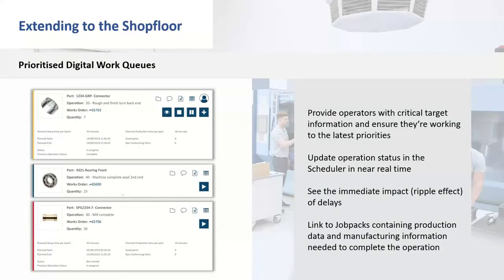The output of the schedule can be distributed to the shop floor. You could print it and pin it on a board, but the danger is it gets out of date very quickly — as soon as a job overruns, the subsequent schedule changes as operations flow through to other resources. It's important that changes reach the operator as close to real-time as possible, and that we get their feedback on shop floor progress. On screen is an electronic work queue from Seeky Air, showing the order in which work should be produced — connector, bearing front, connector — which is the sequence the planner has set.